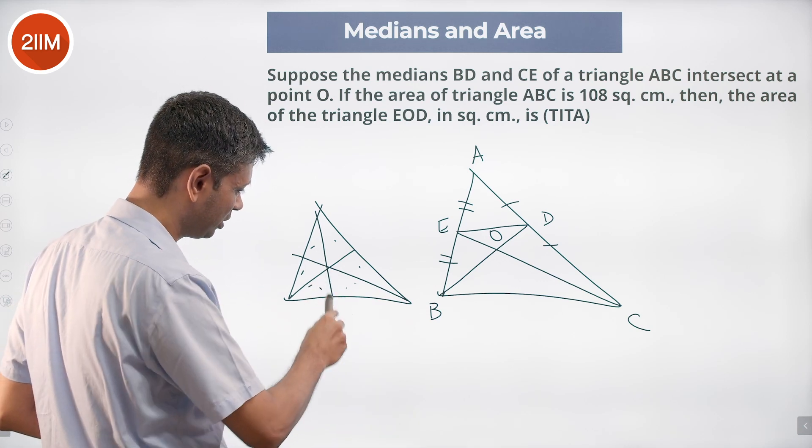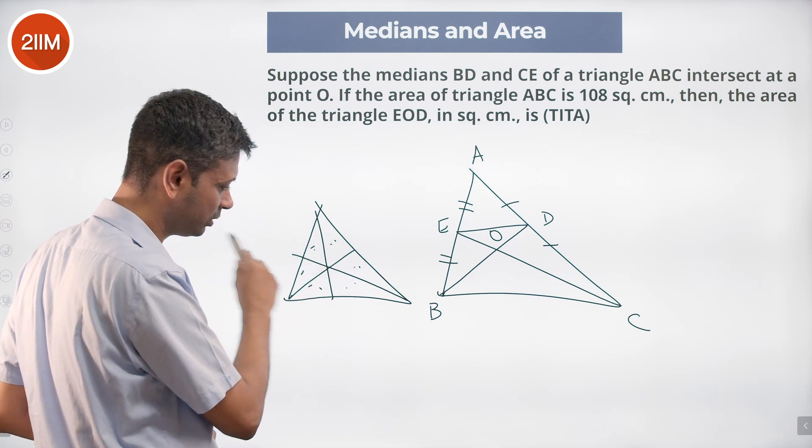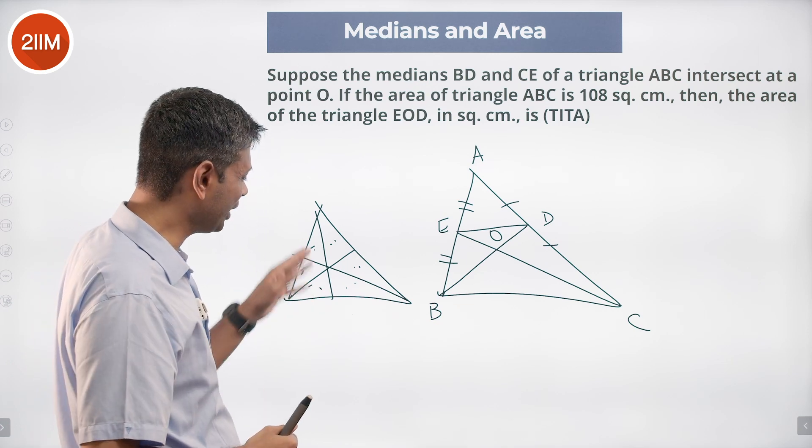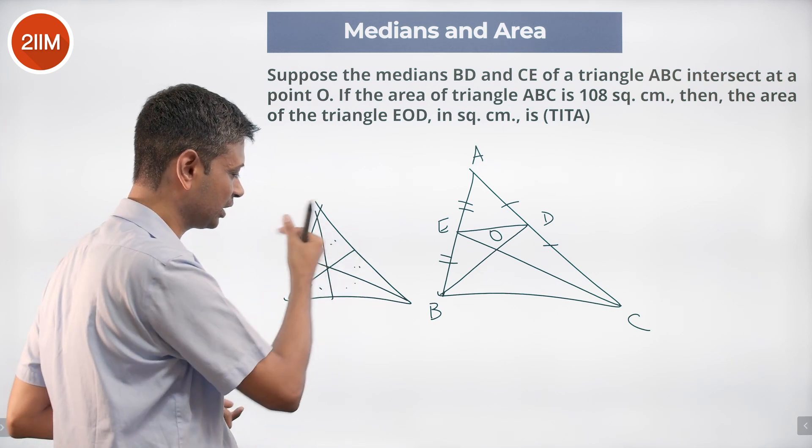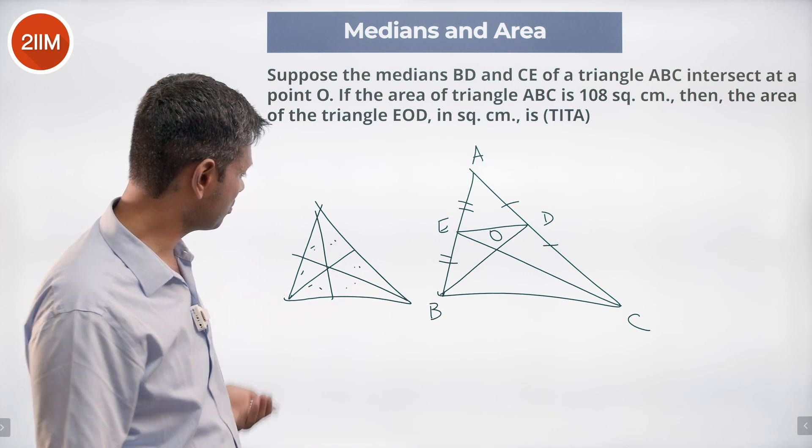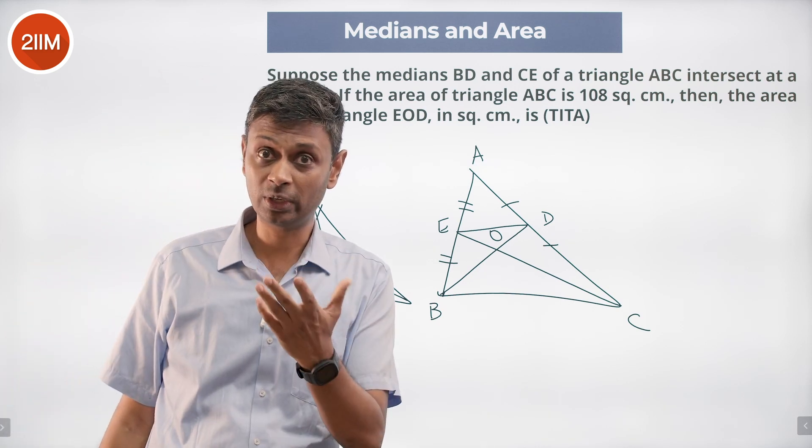These two are equal, this is a median—and similarly for the others. We can prove that each of these bigger chunks are equal to each other. The three medians break the triangle into six parts of equal area.